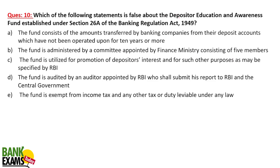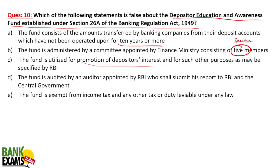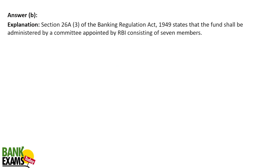Question 10: Which of the following statements is FALSE about the Depositor Education and Awareness Fund established under section 26A of the Banking Regulation Act 1949? The fund consists of amounts transferred from deposit accounts not operated for 10 years — true. The fund is administered by a committee appointed by the finance minister and consists of 7 members — this is false, as it is not 5 members but 7. The fund is utilized for promotion of depositors' interests as prescribed by RBI — true. The fund is audited by an auditor appointed by RBI — true. The fund is exempt from income tax and other levies — true. So B is the false statement.